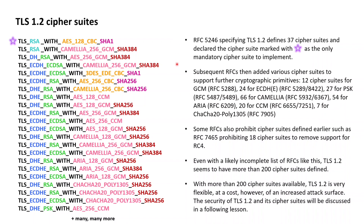Subsequent RFCs released over the following years then added various additional cipher suites to provide support for more cryptographic primitives, such as the authenticated encryption with associated data block cipher modes of operation GCM and CCM, and static or ephemeral elliptic curve Diffie-Hellman key exchanges.